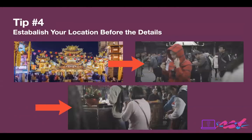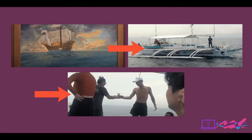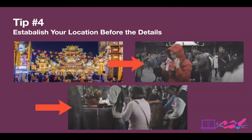Moving on to tip number four: establish your location before details. This kind of goes hand in hand with being smart with transitions — if you want to use a certain transition, make sure it has purpose. But establishing your location before the details is important specifically for travel videos.